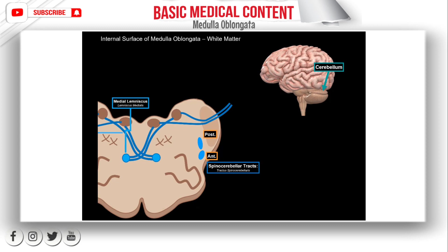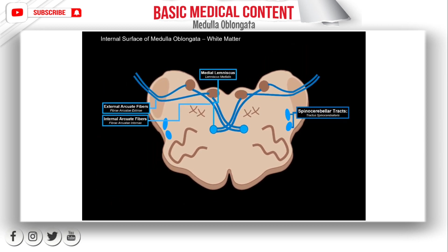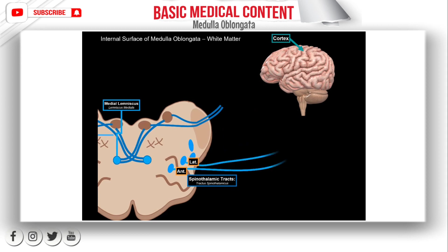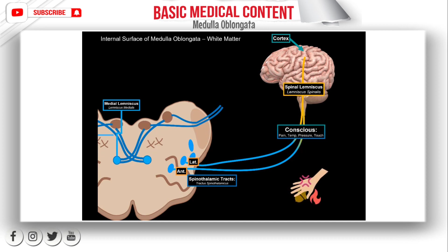The posterior spinocerebellar tract is closest to the inferior cerebellar peduncles, so it goes through them to the cerebellum. The anterior spinocerebellar tract ascends through the medulla oblongata, through the pons, and then to the midbrain, where it goes to the cerebellum through the superior cerebellar peduncles. Since these tracts go to the cerebellum, they are responsible for unconscious proprioception, giving information about posture and joints. We also have the anterior and lateral spinothalamic tracts, which go to the primary somatosensory area in the cortex — ascending as the spinal lemniscus, providing conscious sensory information for pain, temperature, pressure, and touch.